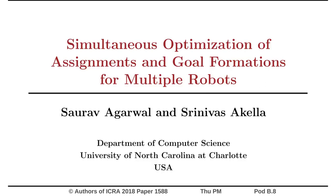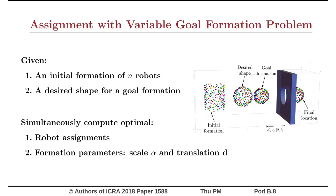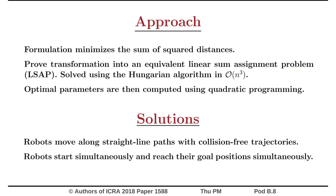This paper presents algorithms to simultaneously compute the optimal assignments and formation parameters for a team of robots. Given an initial formation of n robots and a desired shape for a goal formation, the task is to simultaneously compute the optimal robot assignments and goal formation parameters. Here we have the freedom to change the location and the scale parameters of the goal formation. Our formulation minimizes the sum of square distances.